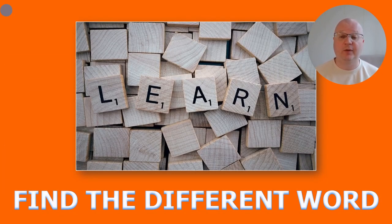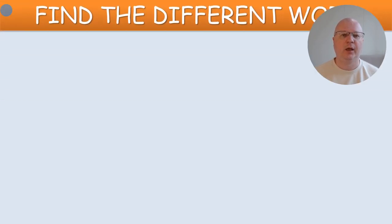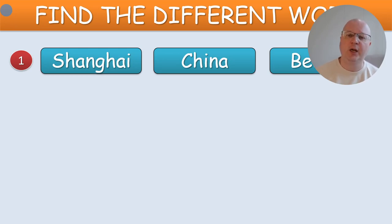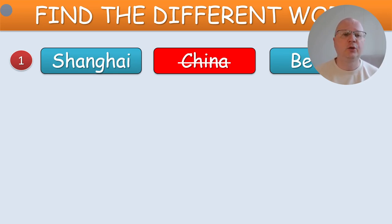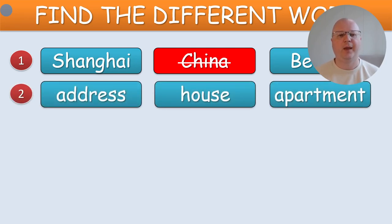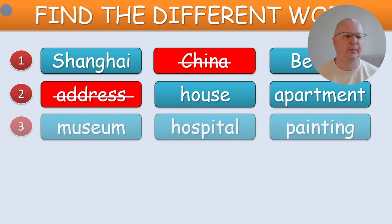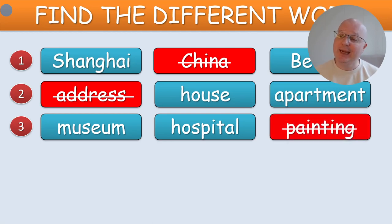Next exercise: Find a different word. This is a vocabulary comprehension exercise. You can do it in pairs or invite students to do it on the board. Shanghai, China, Beijing — China is the odd one out because it's a country and Shanghai and Beijing are cities. Address, house, apartment — address is the odd one out. Museum, hospital, painting — painting is the odd one out.